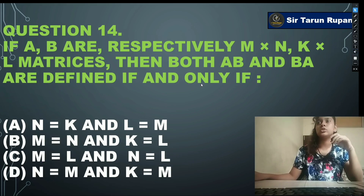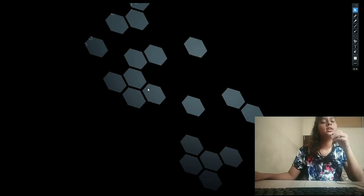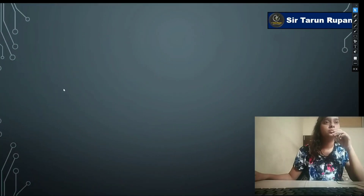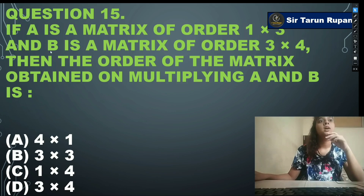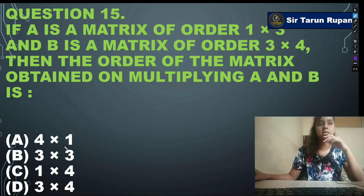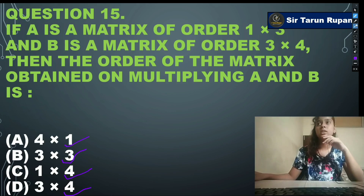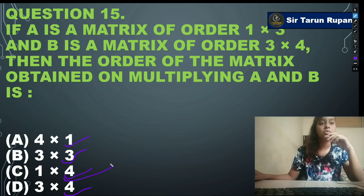Last question, number 15: if A is a matrix of order 1×3 and B is a matrix of order 3×4, then the order of the matrix obtained by multiplying A and B is — option A: 4×1, option B: 3×3, option C: 1×4, option D: 1×3×4. Our correct answer is option C: 1×4.